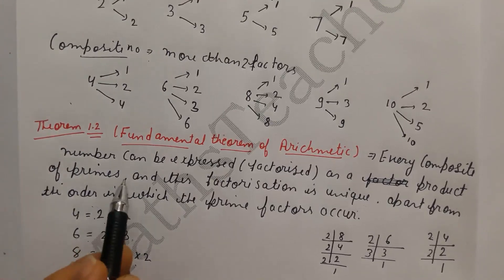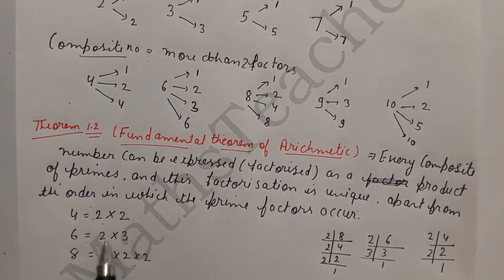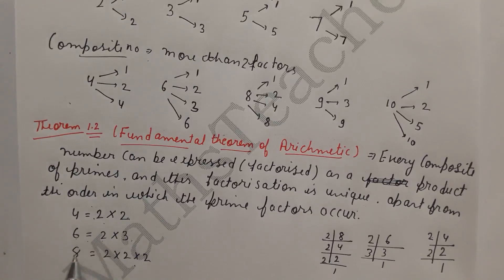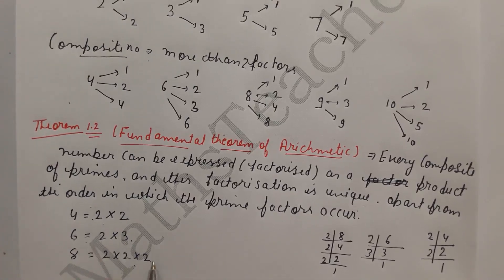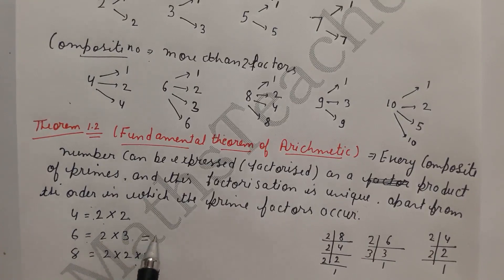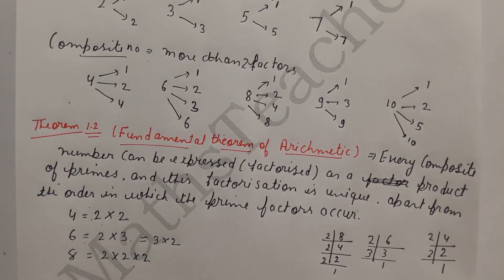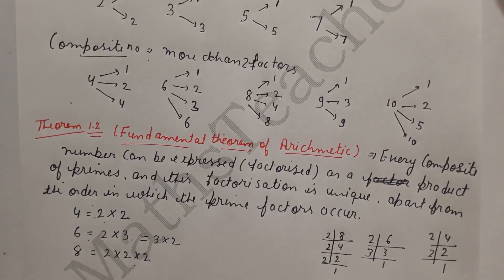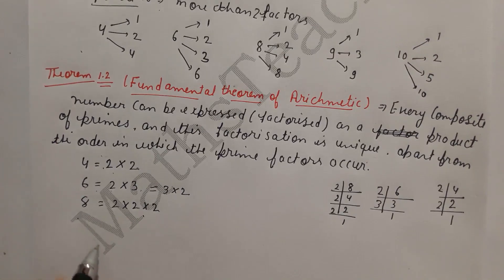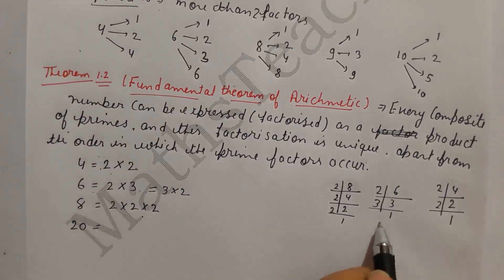So you can understand that all composite numbers can be written in the form of a product of prime factors. This factorization is unique. Now let's take another example: the composite number 20. We will factorize it starting with the smallest prime.